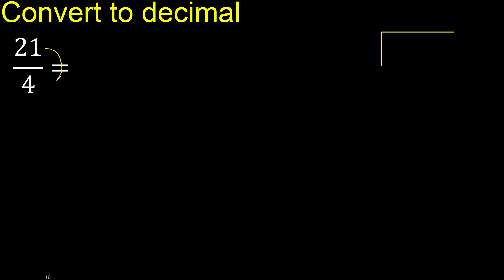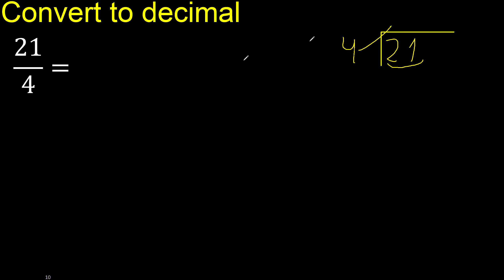21 divided by 4. 2 is less, therefore next. 21 is not less, therefore with 21 — 4 multiplied by which number is nearest to 21 but not greater? 4 multiplied by 6 is 24, which is greater. 4 multiplied by 5 is 20. 20 is not greater. 21 minus 20 is 1.